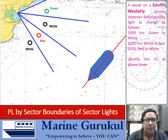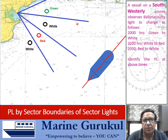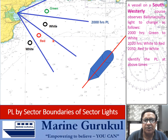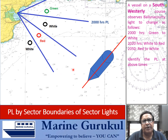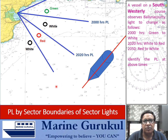Here is the vessel on the southwesterly course. As she crosses this PL, the color would change from green to white, so this would be the 2000 PL. When she crosses the next PL, the color would change from white to red, making it the 2020 PL. And when she crosses the following PL, the color would change from red to white — this becomes the 2050 PL.